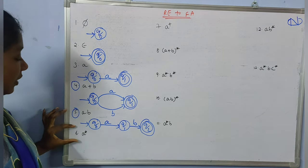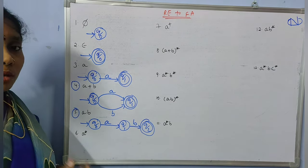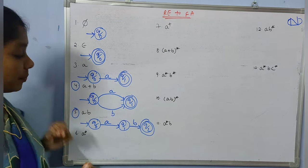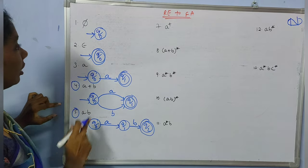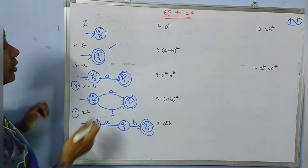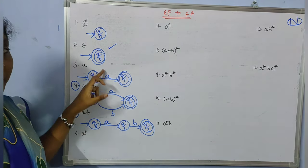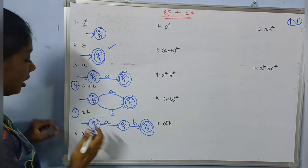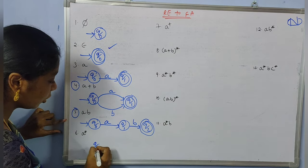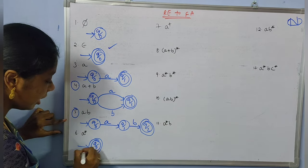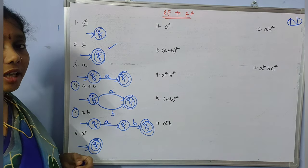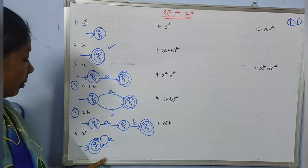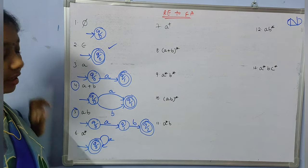Coming to the sixth one, 'a*' — that means Kleene closure. Kleene closure includes epsilon, or one 'a', or two 'a's, three 'a's, etc. Since it includes epsilon, the initial state should also be the final state. So q0 is the initial state and also the final state, and it accepts any number of 'a's via a self-loop. This is the automata for the regular expression 'a*'.